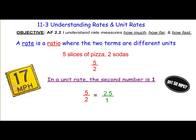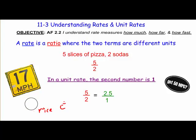This lesson is on understanding rates and unit rates. A rate is a ratio where the two terms are different units. Remember when we were comparing water to rice in the last lesson? We were comparing cups of water to cups of rice — the measurement unit was the same. Now we're going to be looking at things like miles per hour. Those are different units of measurement: miles is a unit of distance, and hours is a unit of time.